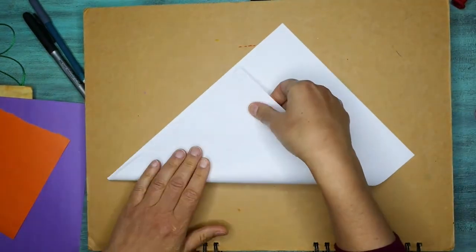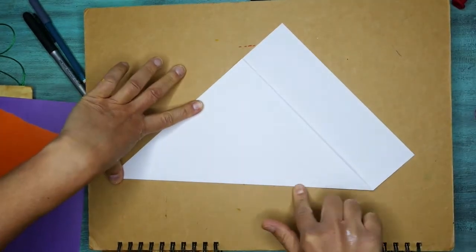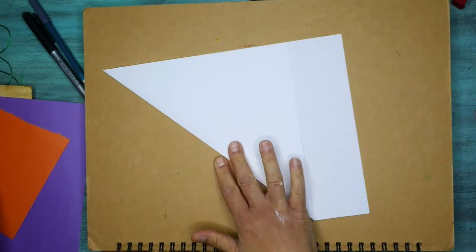So the first thing we need to do is start with a paper square. I'm just using some computer paper here. I fold up one corner and then I'm just going to cut off the extra so that I have a perfect square.